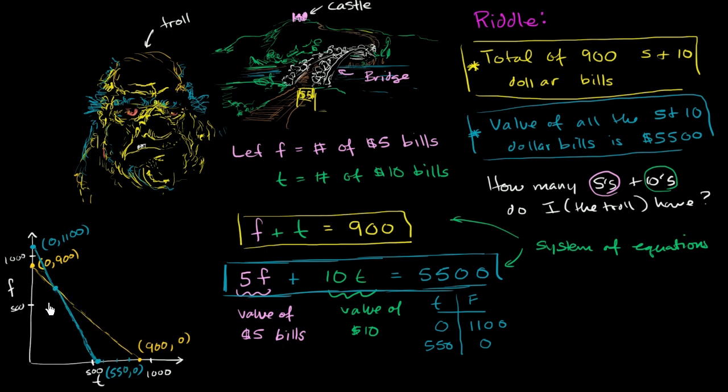And what we can do is, if we drew this graph really, really precisely, we could see how many fives that is and how many tens that is. And if you look at it very precisely, and actually I encourage you to graph it very precisely and come up with how many fives and how many tens that is.